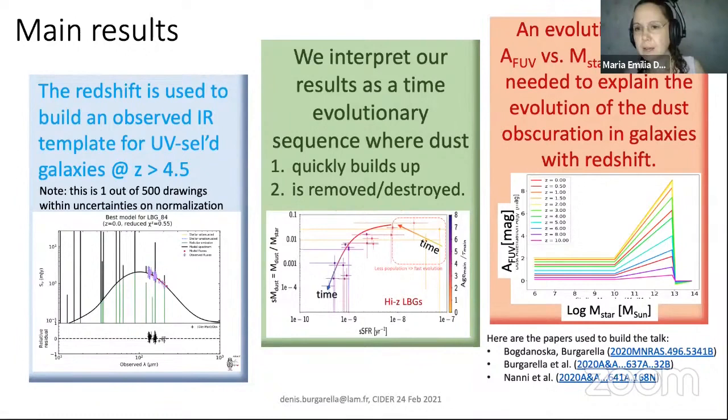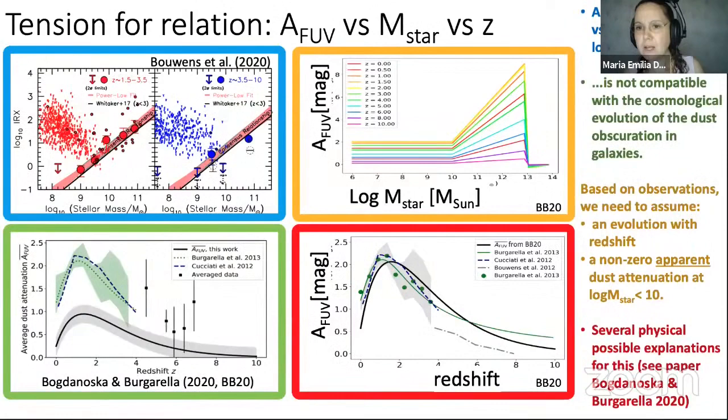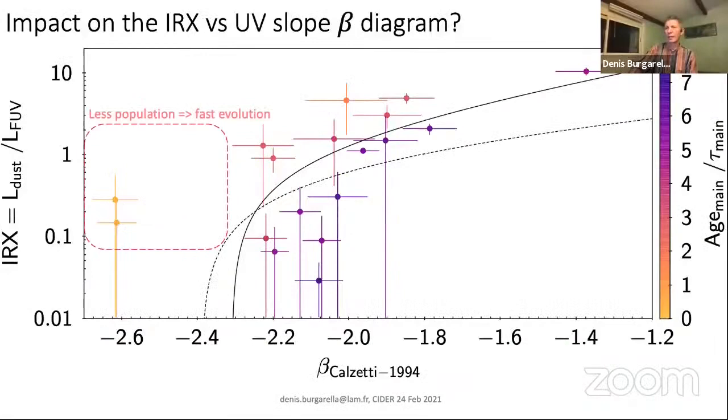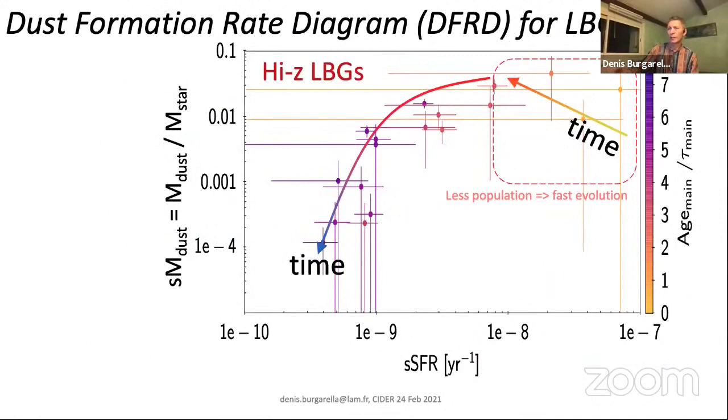I'm looking in Slack. Andreani says the error bars on the dust mass are very small, while we know that it's not an easy parameter to estimate. Why is that?